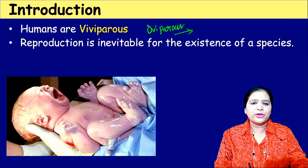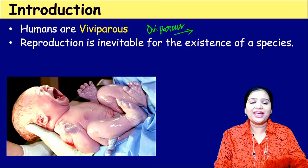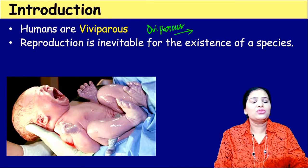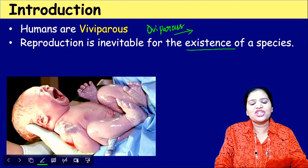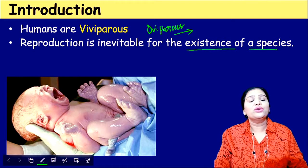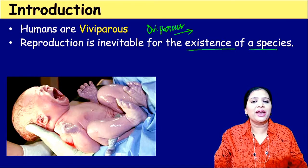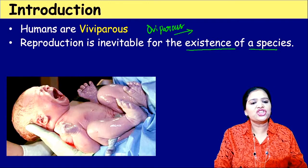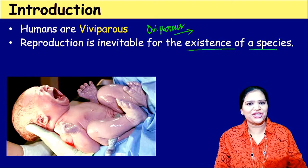Why should organisms reproduce? Why particularly should humans reproduce? Can we live without reproduction? Yes, a human can live for a long period — almost 85 to 90 years — without reproduction. But in order for the species to exist, reproduction is important. If there is no next generation, the human species will not continue. So reproduction is inevitable for the existence of the species.